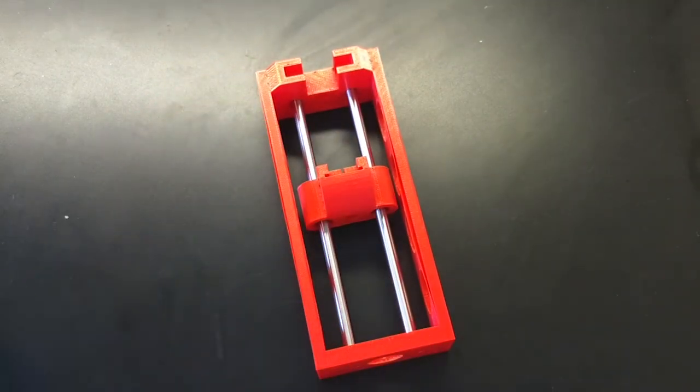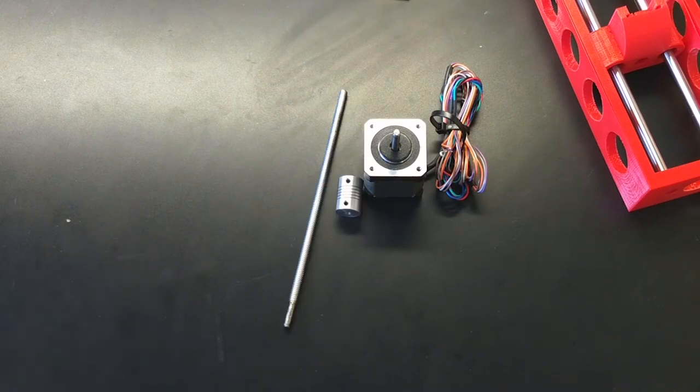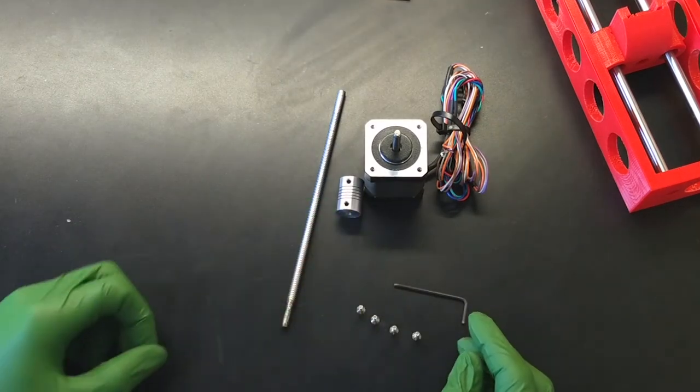Let's get the drivetrain assembled. Get the motor, the flex coupler, threaded rod, allen wrench, and the M3 flat head screws.